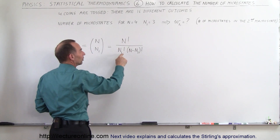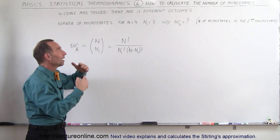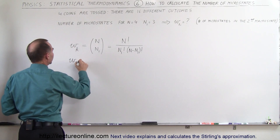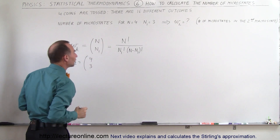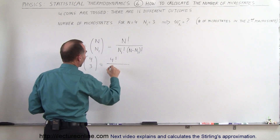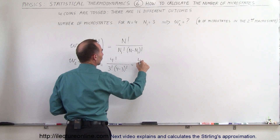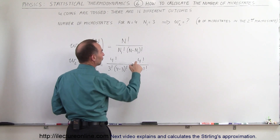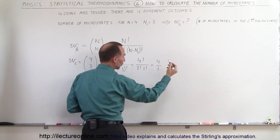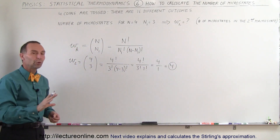The equation becomes n factorial divided by n sub 1 factorial times (n minus n sub 1) factorial — the total entities factorial, divided by the number with heads factorial times the number with tails factorial. So W sub 2 equals 4 factorial divided by 3 factorial times 1 factorial. 4 factorial divided by 3 factorial is simply 4, and 1 factorial is 1, so it's 4 divided by 1 — that particular microstate has 4 microstates.